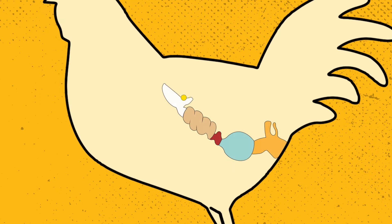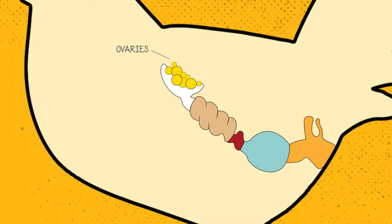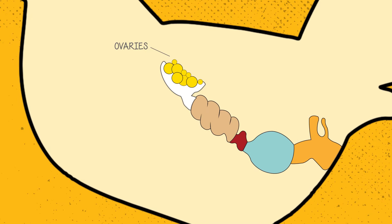Every hen is born with tiny yolks inside her ovary. As those yolks grow, they start the journey through her oviduct.